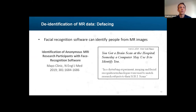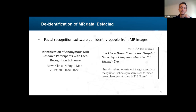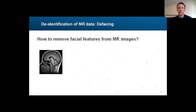People signing on to access these data usually agree not to do anything nefarious with it, but once it's out there, people can do what they want. Nowadays most open repositories deface the data — UK Biobank, ADNI, Human Connectome Project — and certainly BrainCode and OBI are interested in that as well.